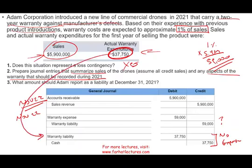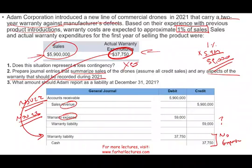Why no expense on the second entry? Because on the date of sale, we already recorded the expense. We estimated $59,000 and have incurred $37,750 in actual warranty costs so far. We cannot call that $37,750 an additional expense because it was already recorded as an expense. All we are doing now is satisfying our liability — reducing it by the amount of warranty service provided.